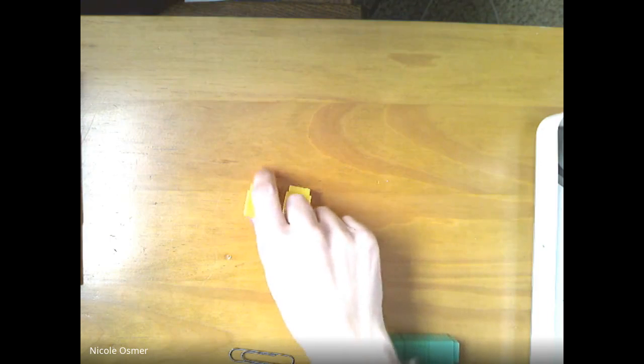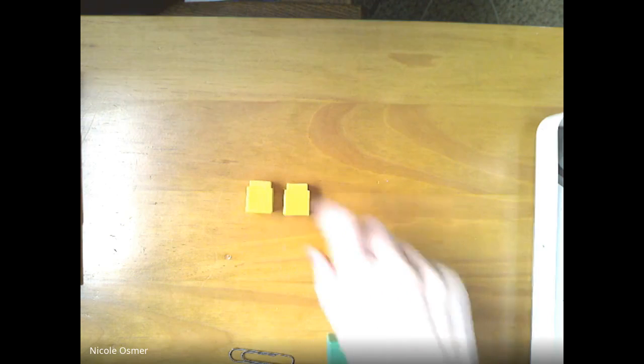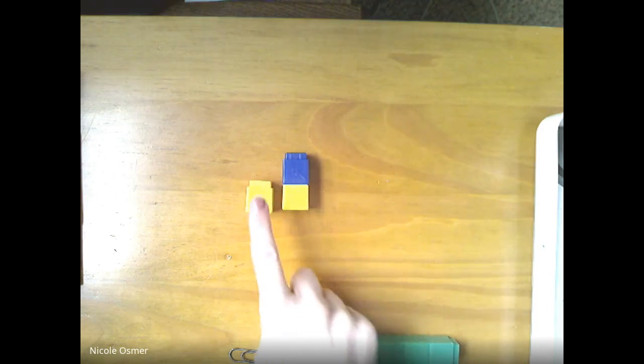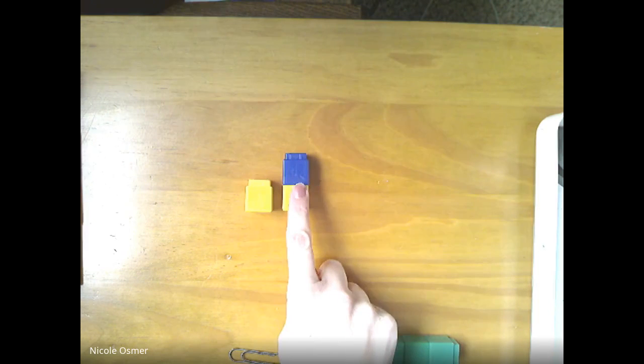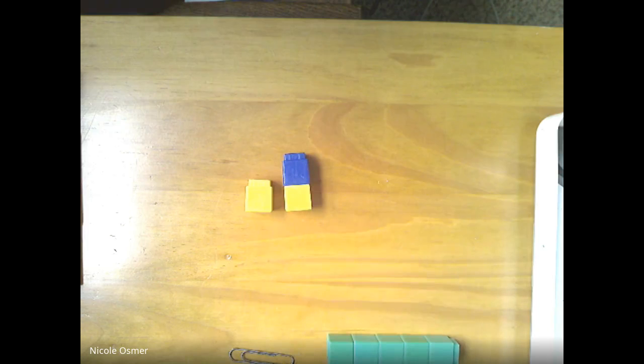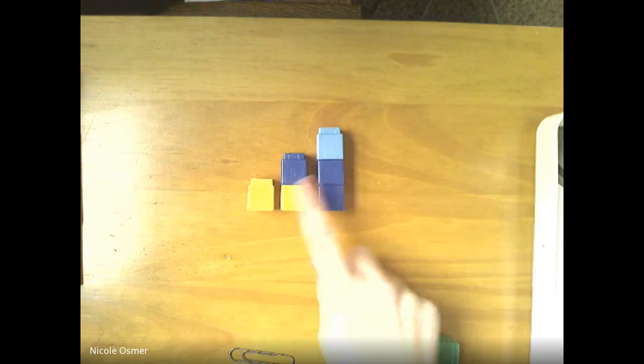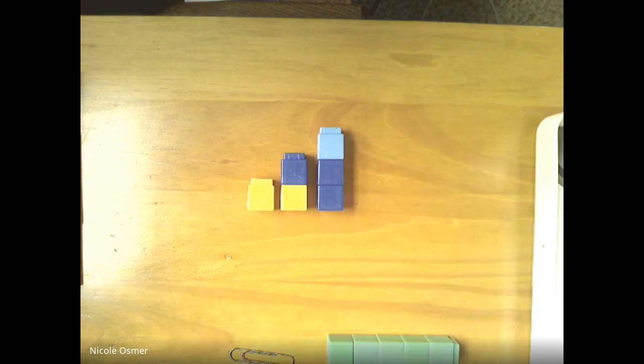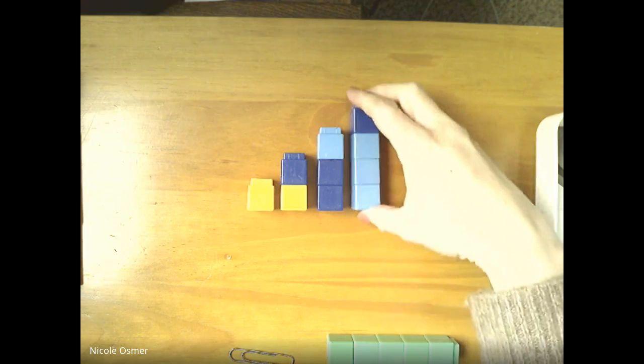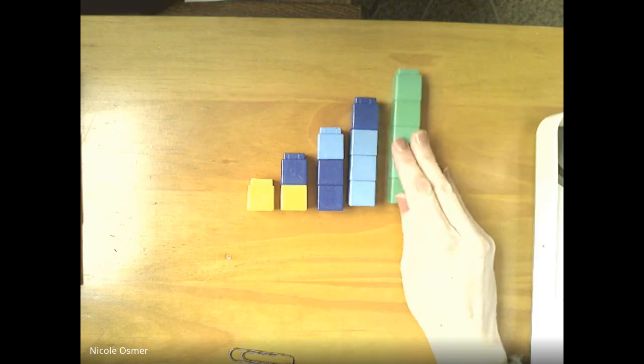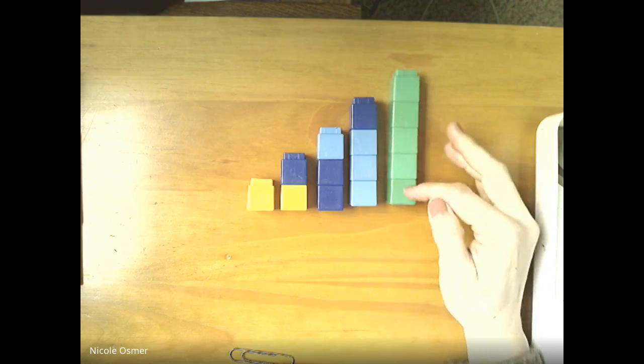One. Now I have one more and I want to make two, so I add one on top. One, two, what comes next? Three, two, and one more. So I have my one, two, three. What comes next? That's right. Good work. Four. And it's going up like our staircase.